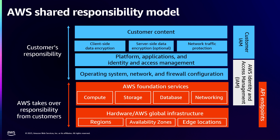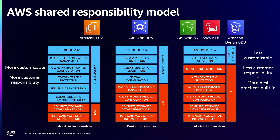The blue section represents the responsibility you need to take care of, which also represents control for you. You get to choose the operating system and the applications that you install on your EC2 instances. Similar to an OSI model, the shared responsibility model is just a model — it's flexible and not a hard and fast rule. Depending on the service, we take over more or less control.